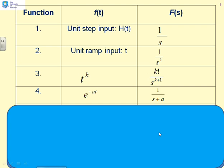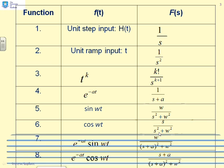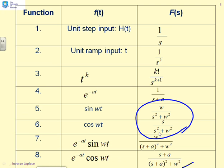Let's remind ourselves about the lookup table. We've dealt with the first four entries — simple steps, ramps, and exponential signals — in the first two videos. Now we want to look at signals of the form sine and cosine, which have quadratic denominators. Or you could have decaying sinusoids, which have a slightly more complicated denominator, but still in quadratic form.